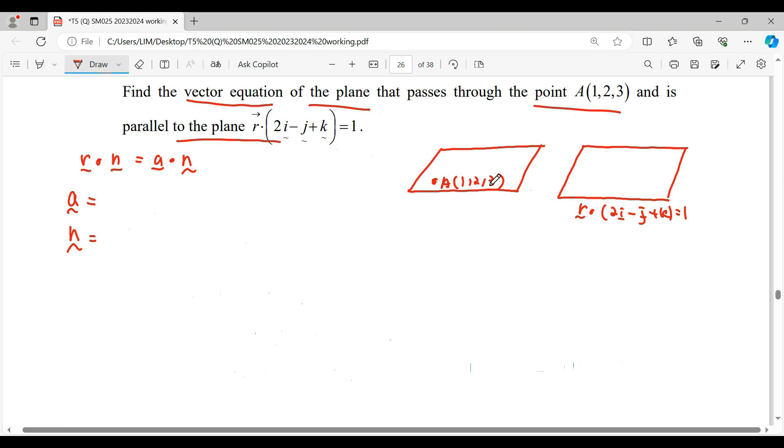For this coordinate (1, 2, 3), we can change it to position vector OA which is 1i + 2j + 3k.